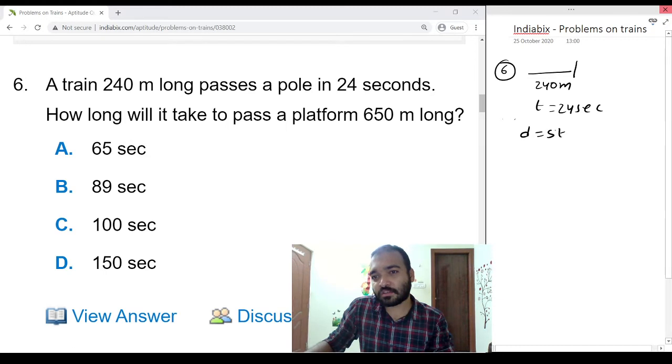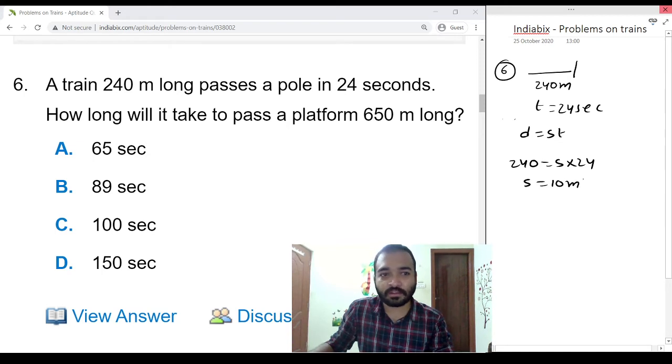So formula is distance equals speed times time. 240 equals speed, we don't know, times 24. Speed is equal to 10 meters per second. How long will it take to pass a platform of 650 meters?